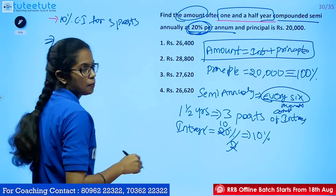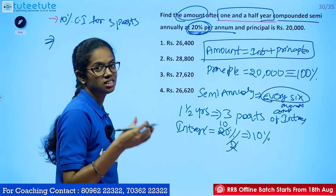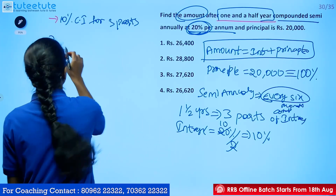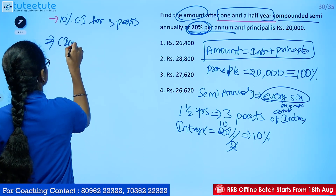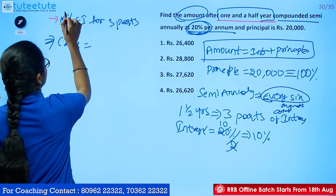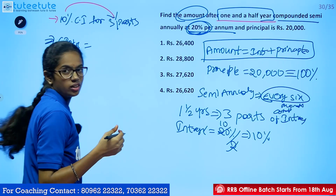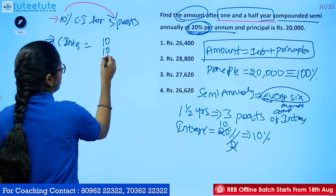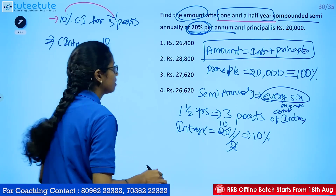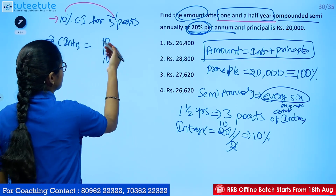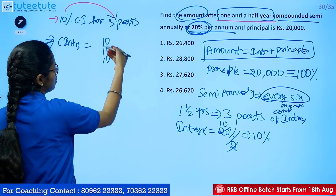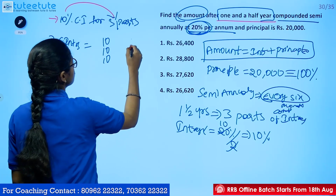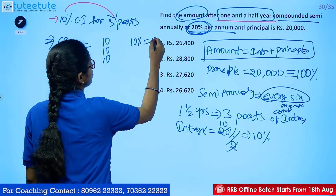We calculate compound interest at 10% for 3 parts. The compound factor is (1 + 10/100)³, which equals (1.10)³. We need to compute this cube value.